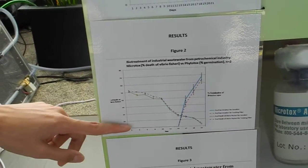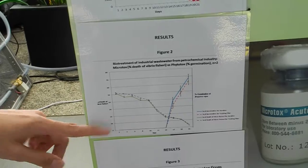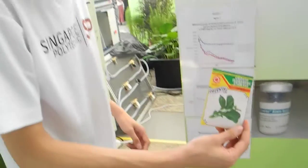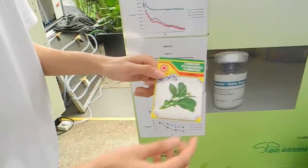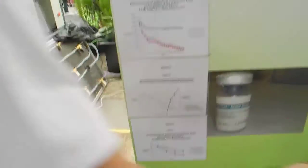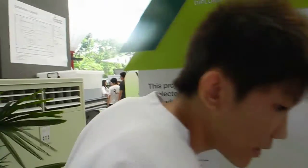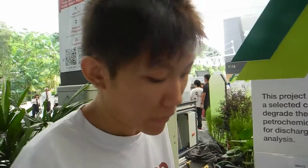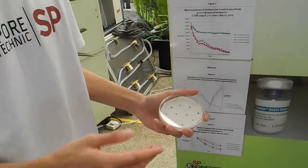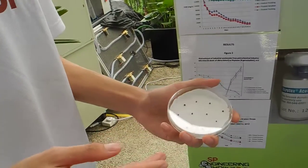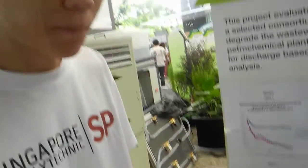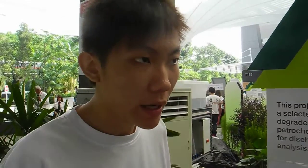One of the other tests we've done is Phytotoxicity. We use Sicarapha seeds — Chinese Chai Xing seeds. We place 10 seeds into a Petri dish and then subject the seeds to wastewater, and put the seeds in the dark for 4 days. At the end of 4 days, we measure the percentage of seed germination.